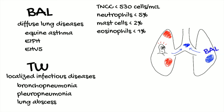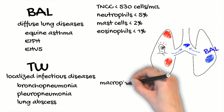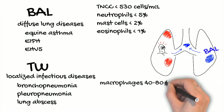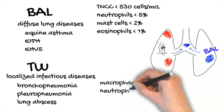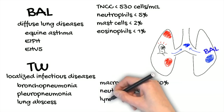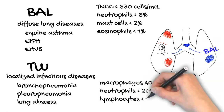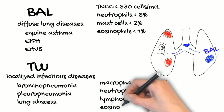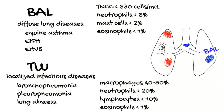Normal TW fluid should contain mucus and some respiratory epithelial cells. Compared with the BAL, the number of macrophages is more variable, while it is normal to find more neutrophils and less lymphocytes. Eosinophils should still be practically absent. There is a poor correlation between TW and BAL neutrophilia, so an increased percentage of neutrophils in a TW cannot support a diagnosis of asthma.